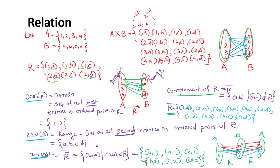For the inverse, the ordered pair (A, B) in relation R becomes (B, A) in the inverse. So the inverse R⁻¹ will be: {(A,1), (B,1), (C,1), (B,2), (C,2), (D,2)}. The complement of a relation consists of elements which are not present in your relation but are present in your Cartesian product.